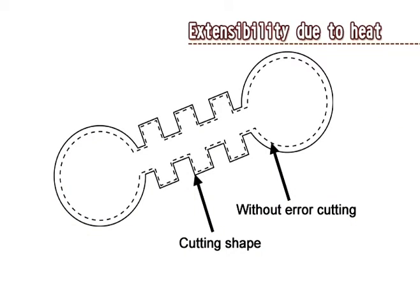Extensibility Due to Heat: When cutting materials with high extensibility, for precise performance, try to eliminate temperature differential between the machine body and workpiece. The machine may be equipped with a dielectric cooling system to control dielectric temperature, and with dielectric flushing equipment to cool down the workpiece and surrounding parts. Temperature variance of machine and workpiece must be controlled in order to achieve precise cutting.